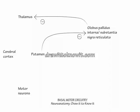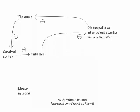Next, show that the rest of the fiber projections are excitatory — those from the cerebral cortex to the putamen, from the thalamus back to the cerebral cortex, and from the cerebral cortex out to the motor neurons. Label this entire circuit as the direct pathway.